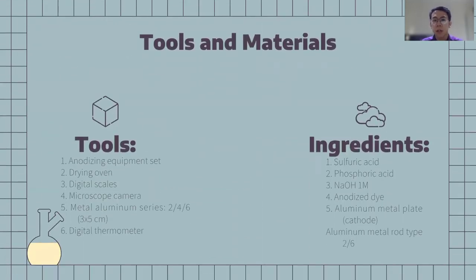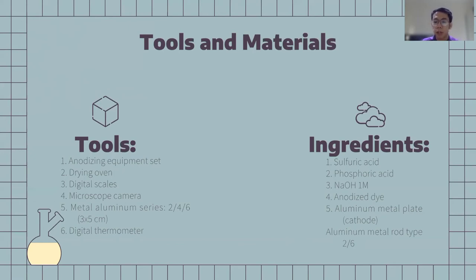Tools and materials: for the tools, we have an anodizing equipment set, drying oven, digital scales, microscope camera, metal aluminum series, and digital thermometer. For the ingredients, we have sulfuric acid, phosphoric acid, anodizing dye, aluminum metal plate, aluminum metal rod, and NaOH 1M.